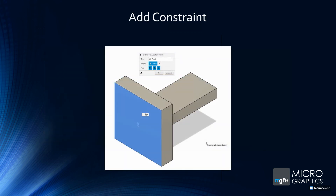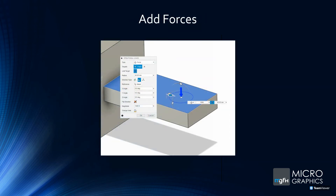Once you've set your material, you can add a constraint. You can see there's a fixed constraint and you can fix it on your axis as well. Then for your loads, I'm applying a force, and you can specify a target for that force — for example, a 40-millimeter radius from the arrow point. The force is only applied in that area, not the entire top face. You can set a magnitude of 1,000 Newtons, flip the direction, or angle it.